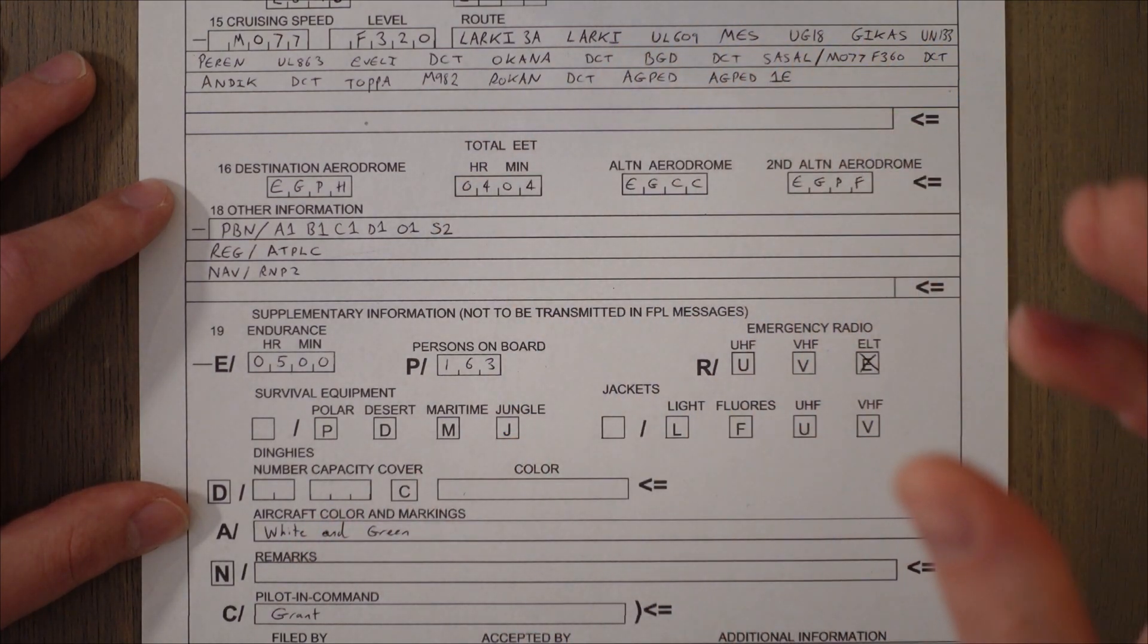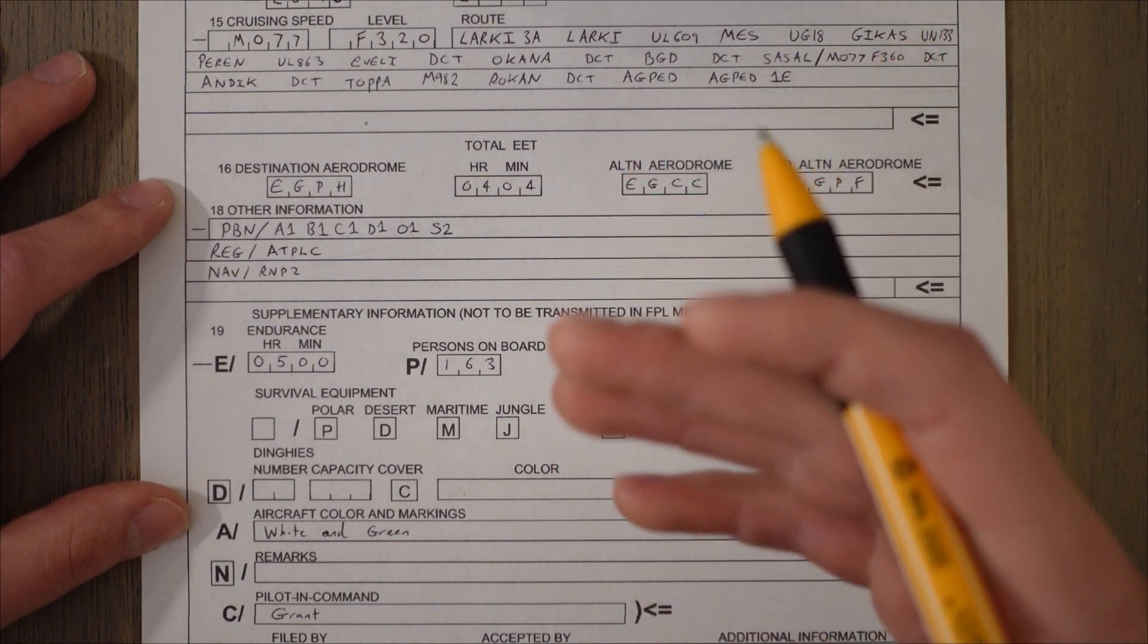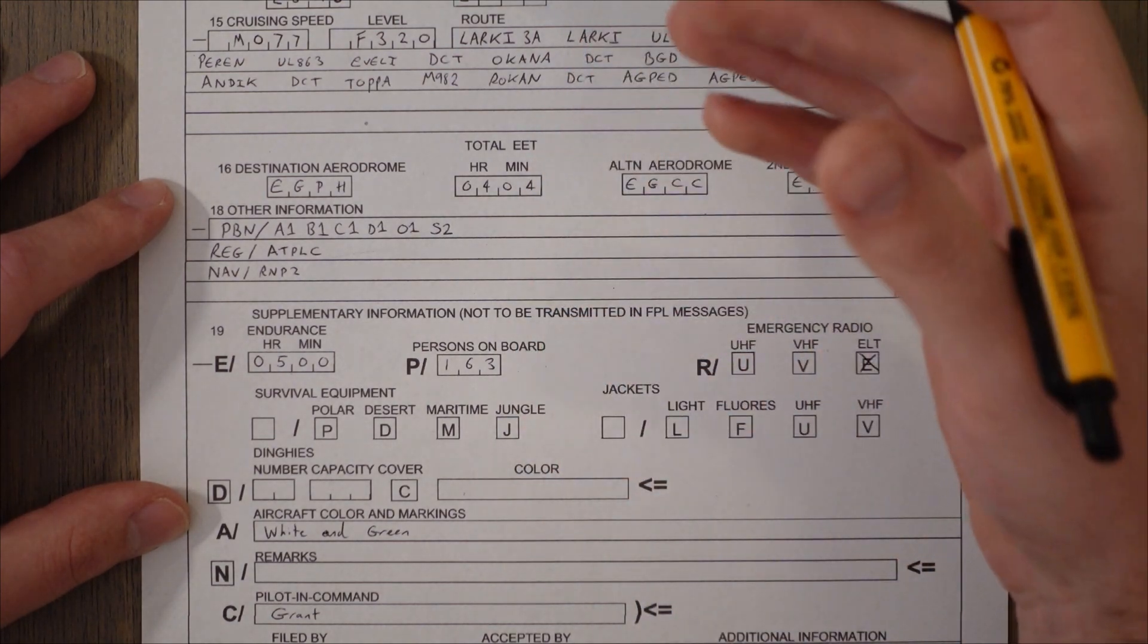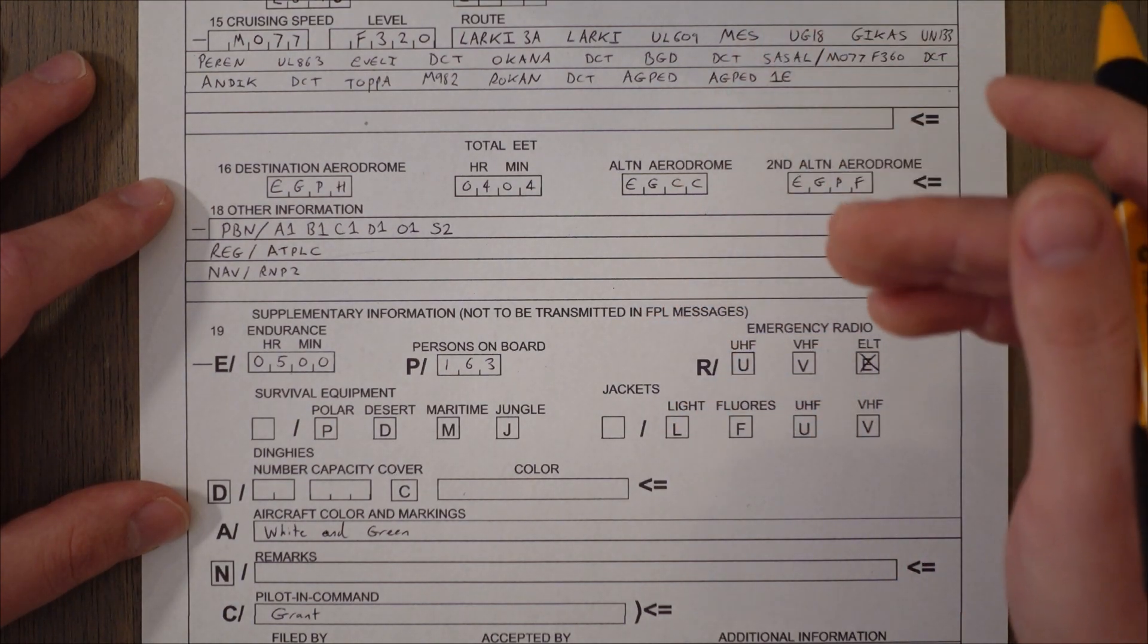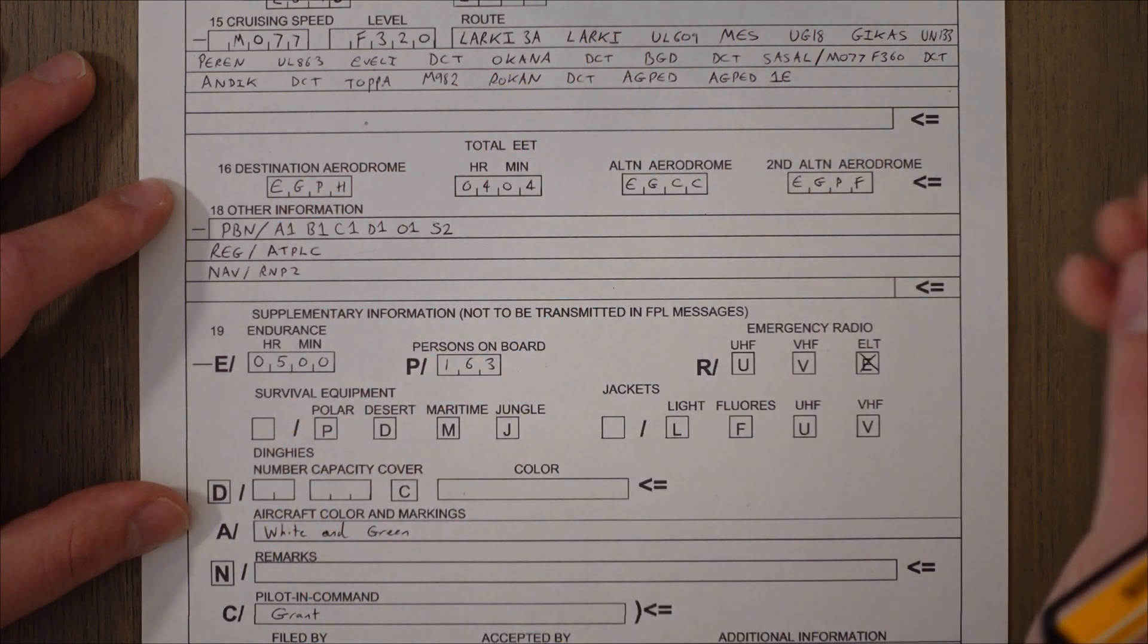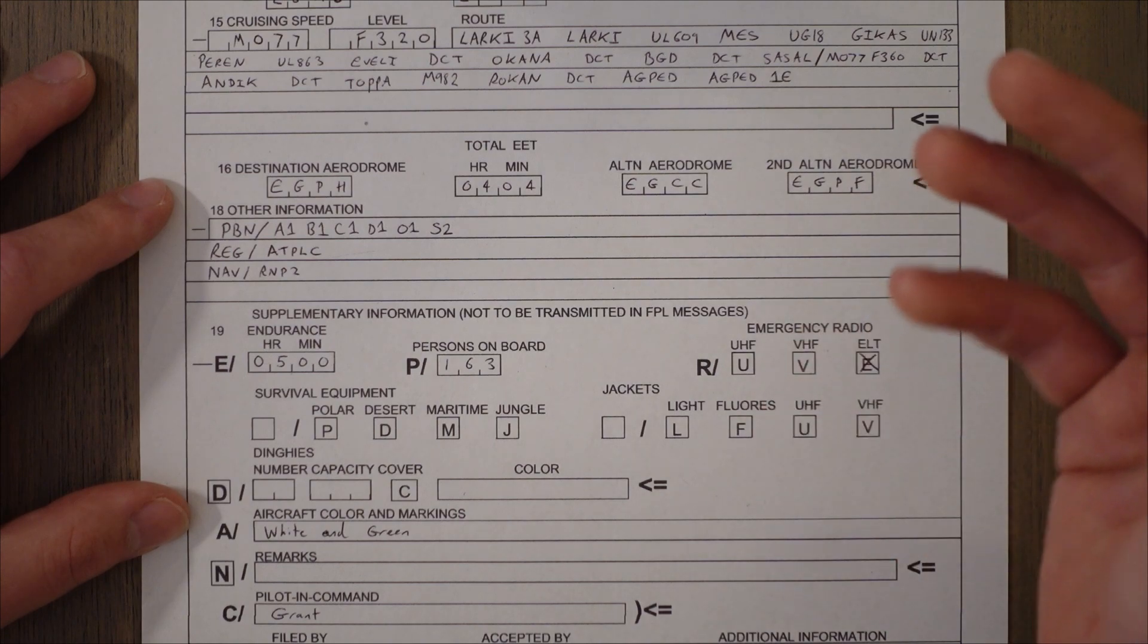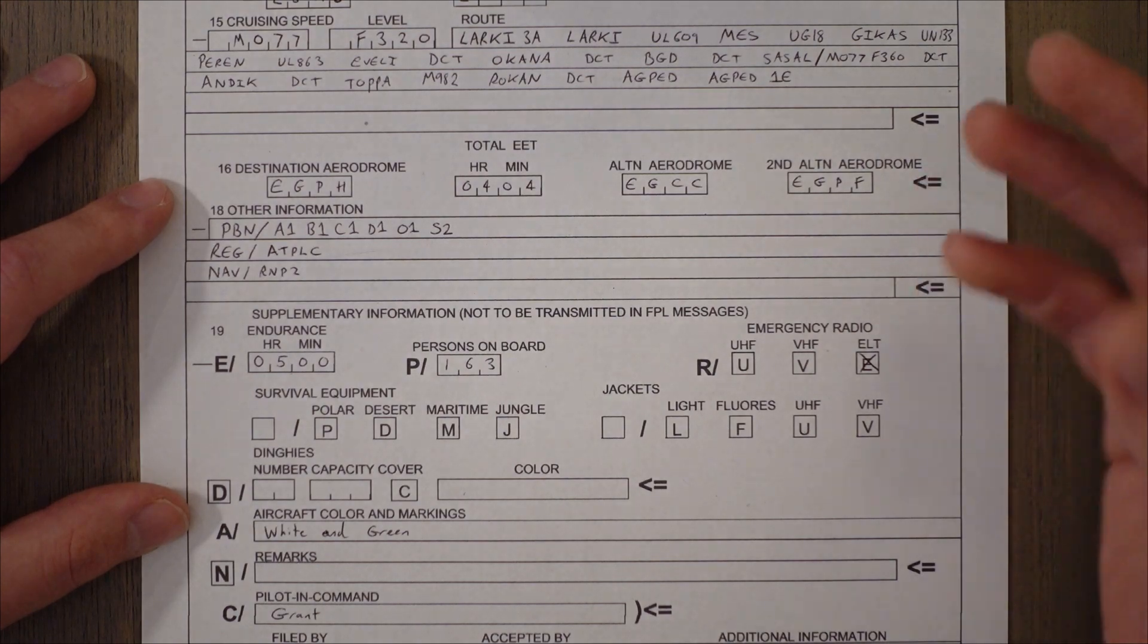Then the aircraft will depart according to that new slot which is sometimes called a CTOT which is calculated takeoff time. And that way there's no congestion in the air where we're burning fuel, running out of fuel, that kind of thing. But it does however mean that we have to sit on the ground at the airport waiting around to take off, usually at the stand.